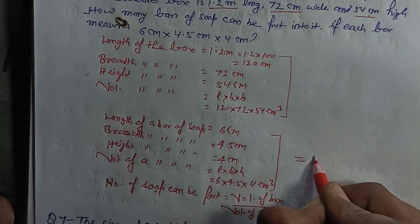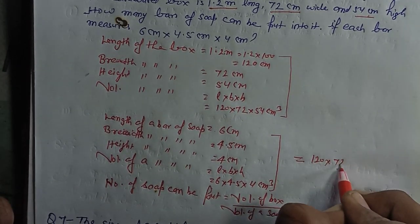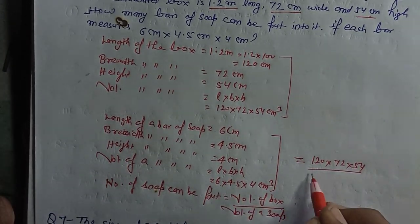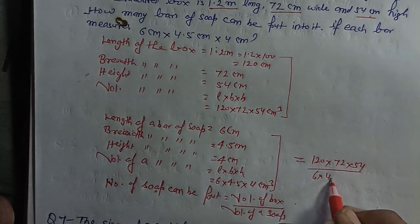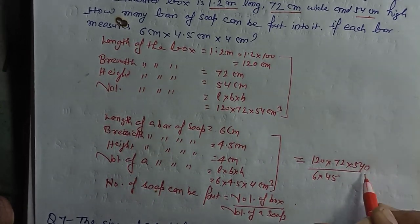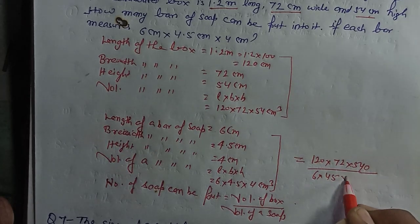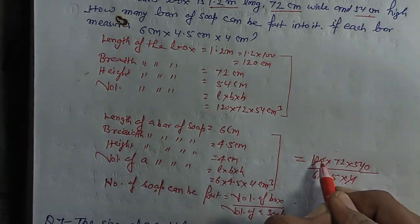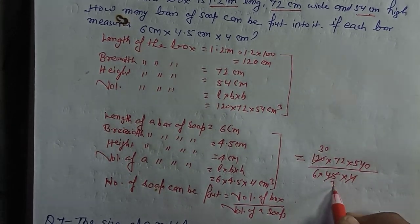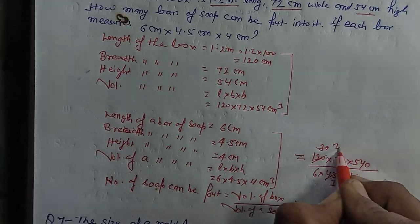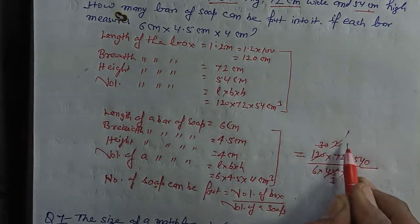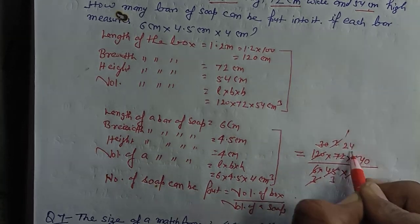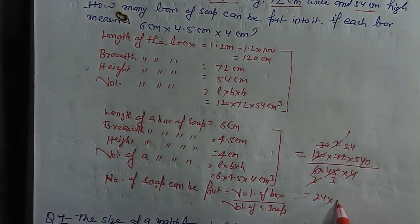You have 120, 72, 54 from the box, and from the soap: 6, 4.5 — but we will write it as 45 and increase the denominator by one zero accordingly — and 4. Now divide: simplify step by step. Cancelling common factors: 120 and 6 give 20, 72 and 4.5 (written as 45) reduce, 54 and 4 reduce. After all cancellations, multiply the remaining values: you get 12 in the numerator after full simplification.